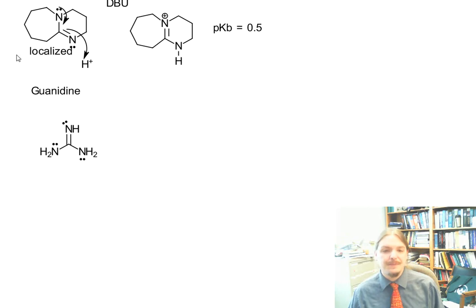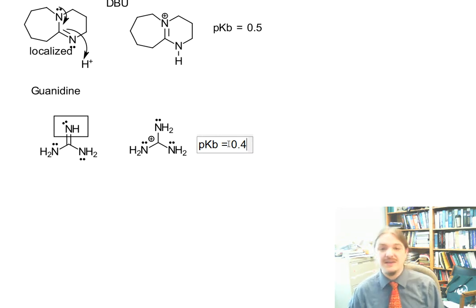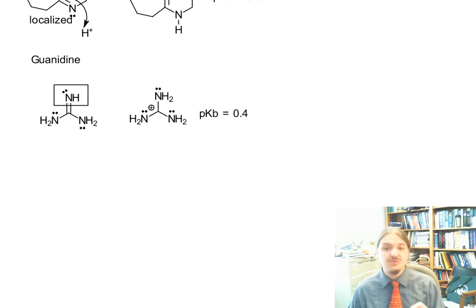So guanidine is basic here because these are the localized lone pairs. And guanidine's conjugate acid is worth drawing because the most important resonant structure actually looks like this: three NH2s, all with their lone pairs, all around a carbocation in the center. And the pKb of guanidine is 0.4. And the cation is almost one of the weakest acids that's out there that's still stronger than water. So really a pretty strong base here. And guanidine is recognized as one of the strongest neutrally charged bases out there.